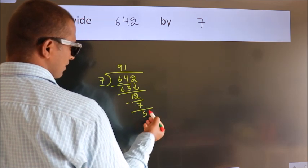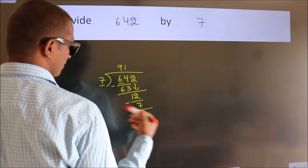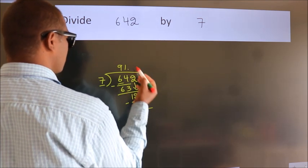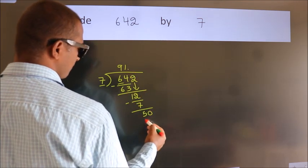After this, no more numbers to bring down. So what we do is, we put a dot and take 0. So 50.